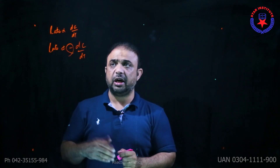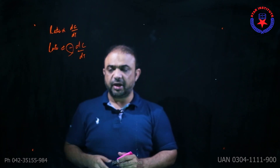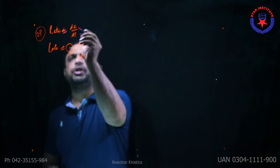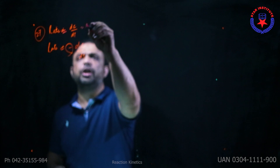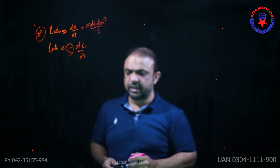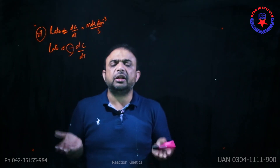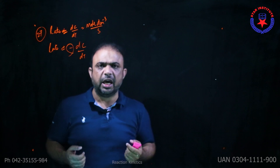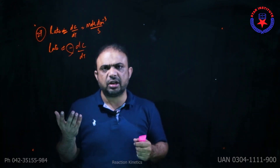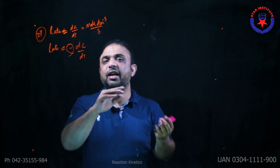Question 26: Change in concentration of reactants and products per unit time (dc/dt) gives the reaction rate. Question 27: The units of rate are moles per dm³ per second — choice A. Question 28: An increase in concentration is directly related to the number of collisions — more concentration means more molecules, more collisions, more fruitful collisions, and higher reaction rate.